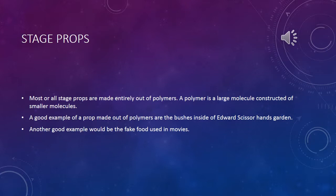Stage props. Most or all stage props are made entirely out of polymers. In fact, almost anything plastic that you may use is made from polymers. A polymer is a large molecule constructed of many smaller particles. A good example of a prop made out of polymers are the bushes inside Edward Scissorhands' garden — they are made entirely out of plastic, with leaves made from polyethylene to make them look shiny. Another good example would be the fake foods used in movies. Scientists nowadays use high-quality plastics to make food that looks really realistic, and some can even be chopped and cooked to make it seem as if the chef is cooking real food.